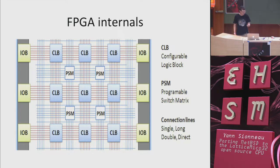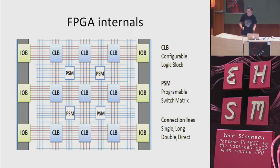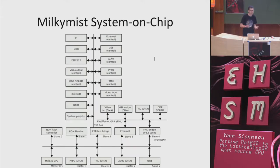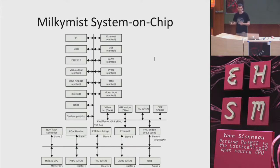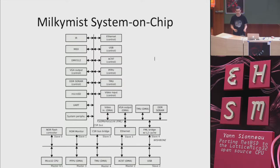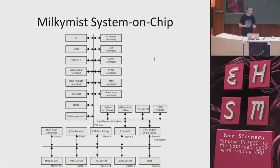What do we put in this FPGA? We can build a processor with it — configure it to behave like a processor. Inside, running, there is a Milky Mist system on chip: many hardware blocks connected to each other controlling video, display, music, and more. Among this big system, there is a CPU — a processor — which is a Lattice Mico32. That's the block I'll talk about today, because it's the one that will run NetBSD.